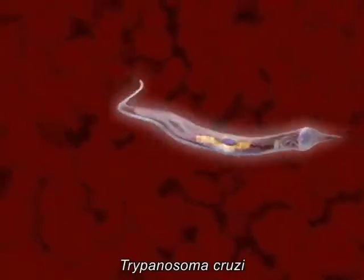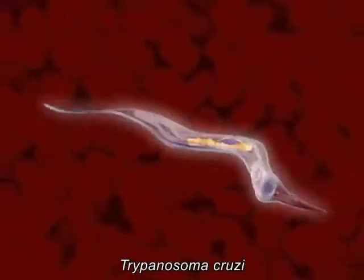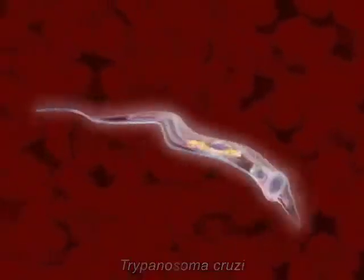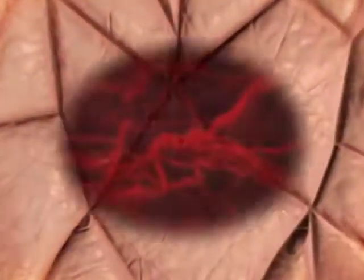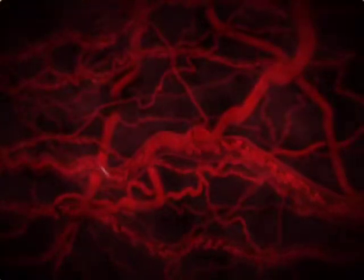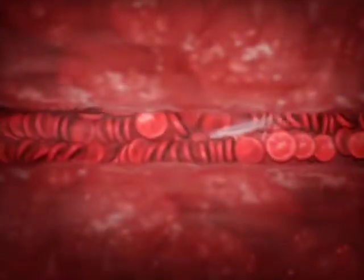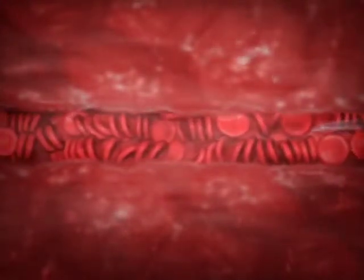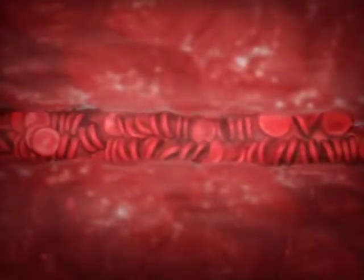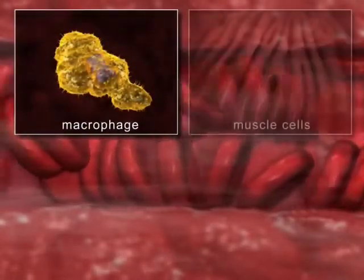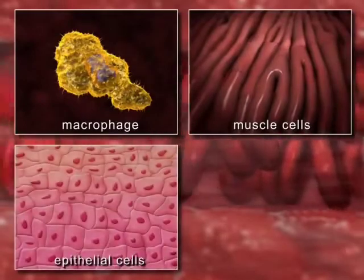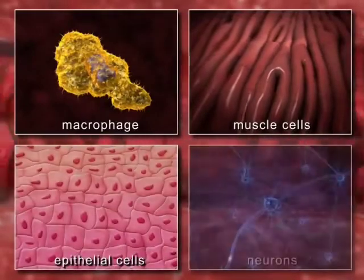Note that this form has great motility. The parasite enters the host through the bite site when the host scratches the site, or when the parasite moves to a region covered by mucosa. The parasite reaches the mammalian bloodstream and subsequently invades different cell types, such as macrophages, muscle cells, epithelial cells, and neurons.